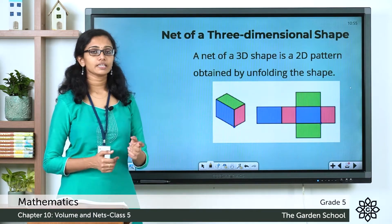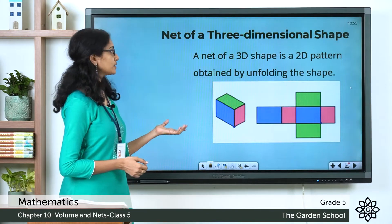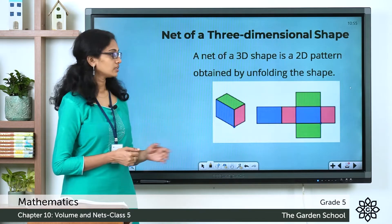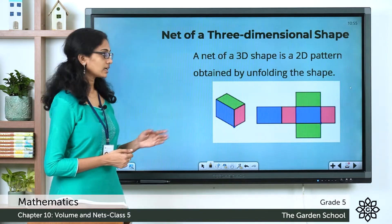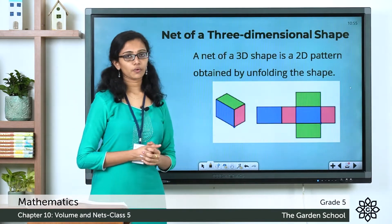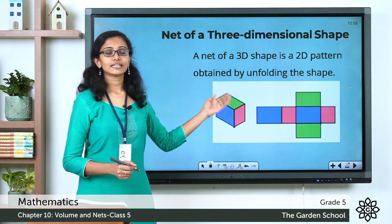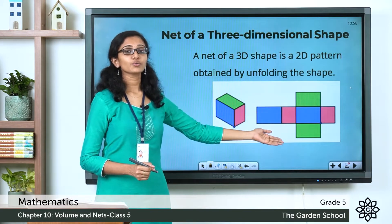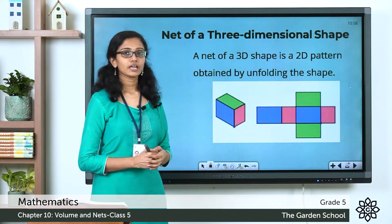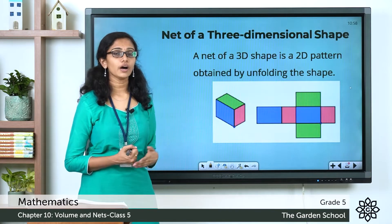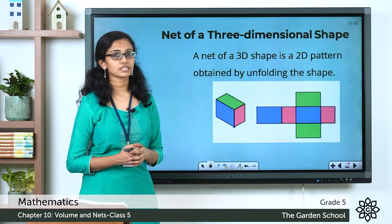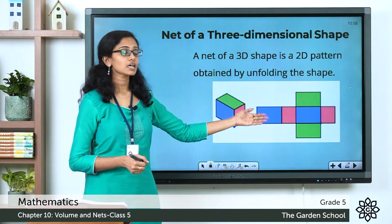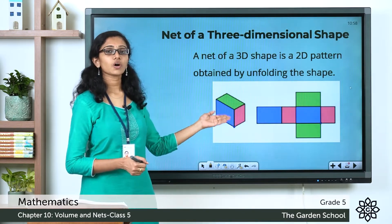A net of a 3D shape is a 2D pattern obtained by unfolding the shape. Here you can see the net of a cuboid. You can see the cuboid here and you can see a net of the cuboid here. This cuboid is a 3D shape or a solid shape whereas this net is a 2D or two-dimensional pattern. How many faces are there for a cuboid? It has got six faces.